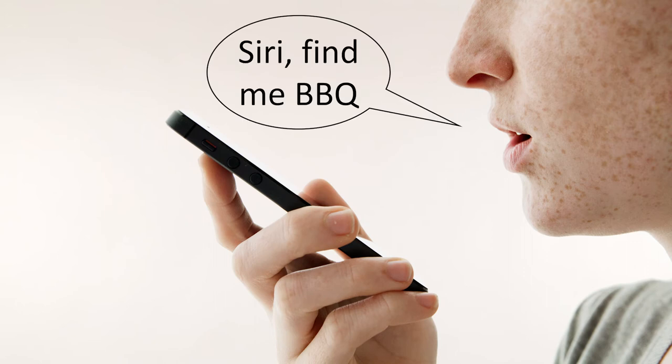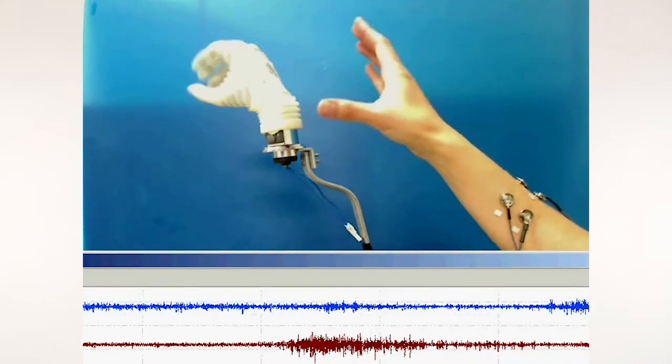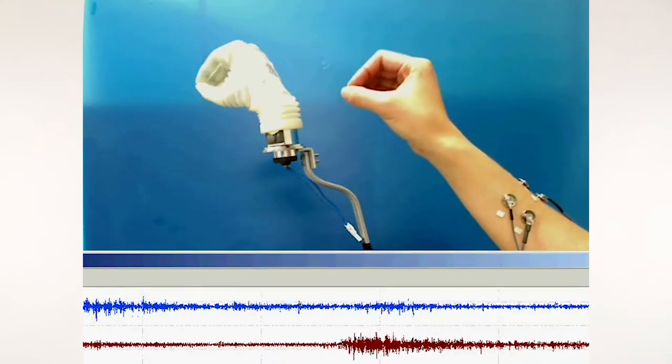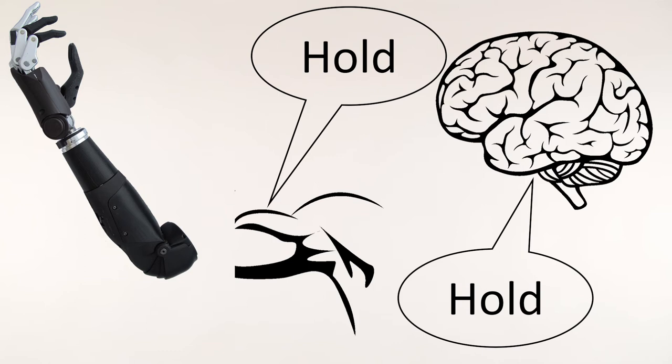The same way that Siri listens to you speak and picks out patterns associated with different words, a prosthesis can listen to electrical signals generated by contracting muscles and decode those movements someone is trying to make. It's like playing a game of telephone, where the brain tells the muscles what to do, and the muscles tell the prosthesis what to do. But you have to hope that the prosthesis is heard correctly.